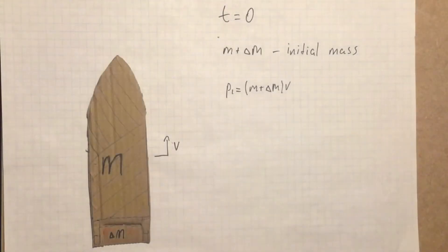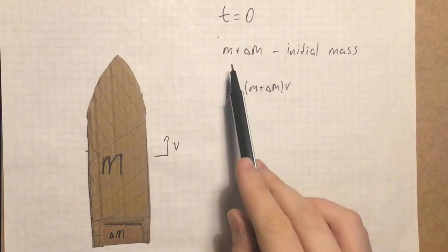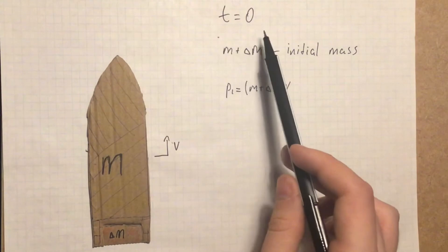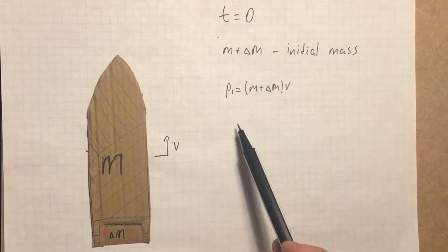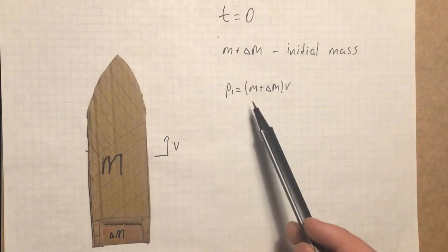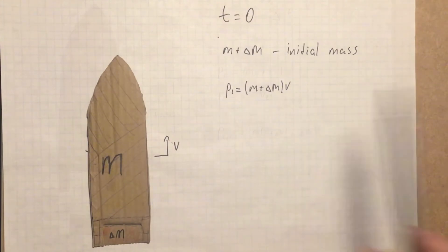Now, let's take a look at how this formula is derived. Let m plus delta m be the initial mass of the rocket and v be the initial velocity of the rocket. Then, at time t equals zero, the impulse of the rocket and of the whole system will be equal to m plus delta m multiplied by v.